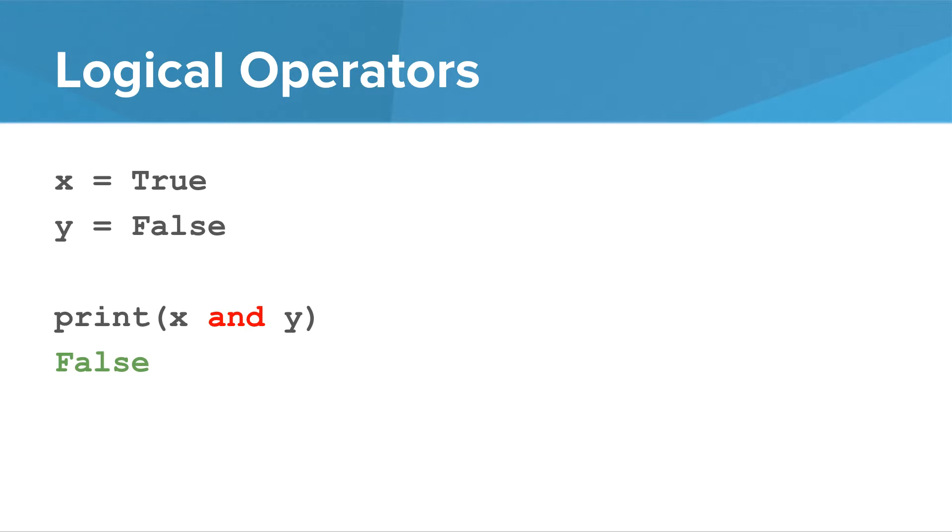When we look at the expression x and y, we see that it evaluates to false, because it's not the case that both x and y are true. Looking at x or y, we see that it evaluates to true, because at least one of x or y is true.